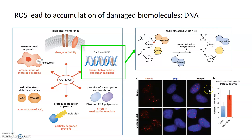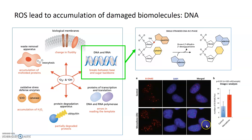If you actually treat cells with this compound that induces ROS generation, you'll notice a dramatic increase in the amount of deoxyguanosine, which you can visualize inside the nuclei of the cells as well as quantify. And that difference is pretty significant. This is a common mechanism by which you can measure ROS in cell culture.